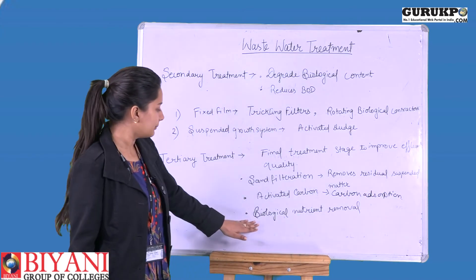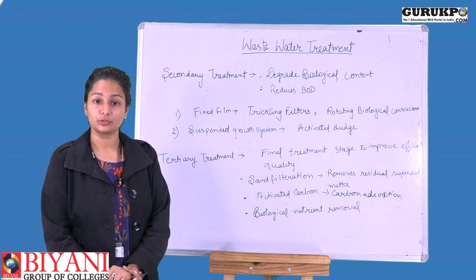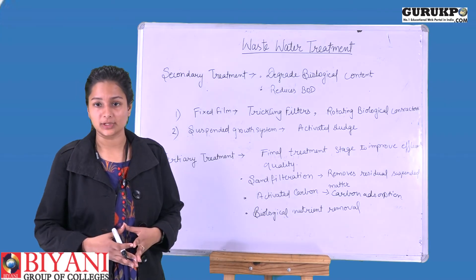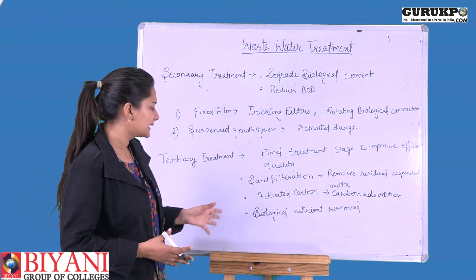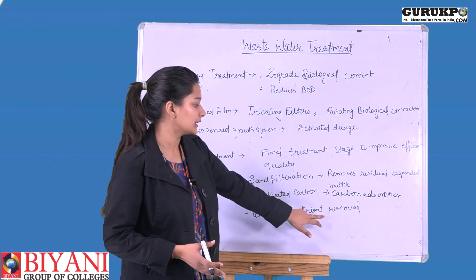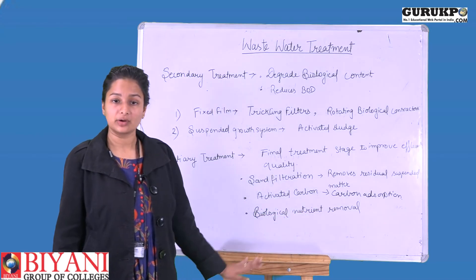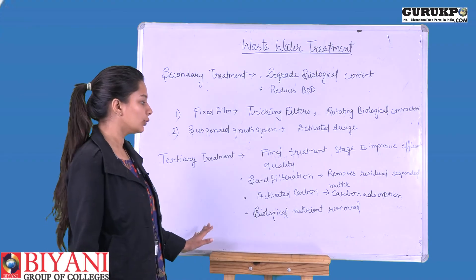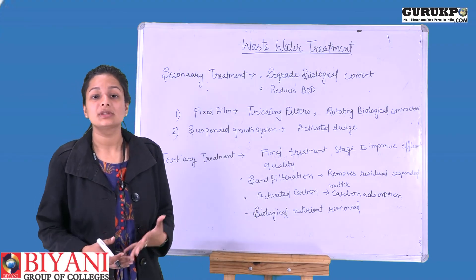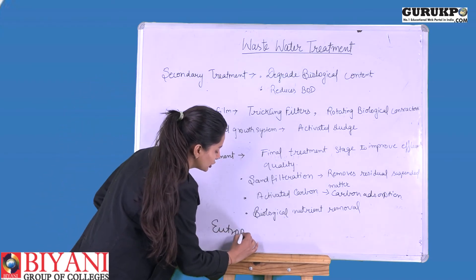Next is biological nutrient removal. Domestic wastewater contains a high amount of nitrogen and phosphorus. If we discharge this water without biological nutrient removal into any water resource, it can cause eutrophication — meaning the presence of excess nutrients leads to excessive plant growth and microbial growth in the receiving water body, eventually degrading that water resource. So we perform biological nutrient removal to remove nitrogen and phosphorus and prevent eutrophication.